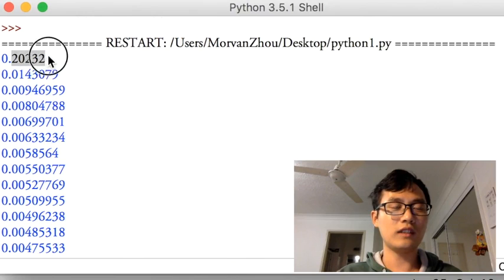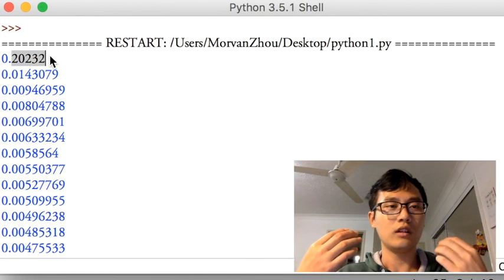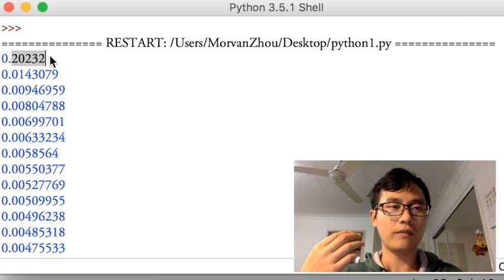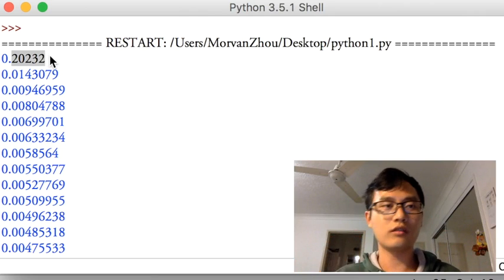So at the initial stage, we have a relatively large error or large loss.